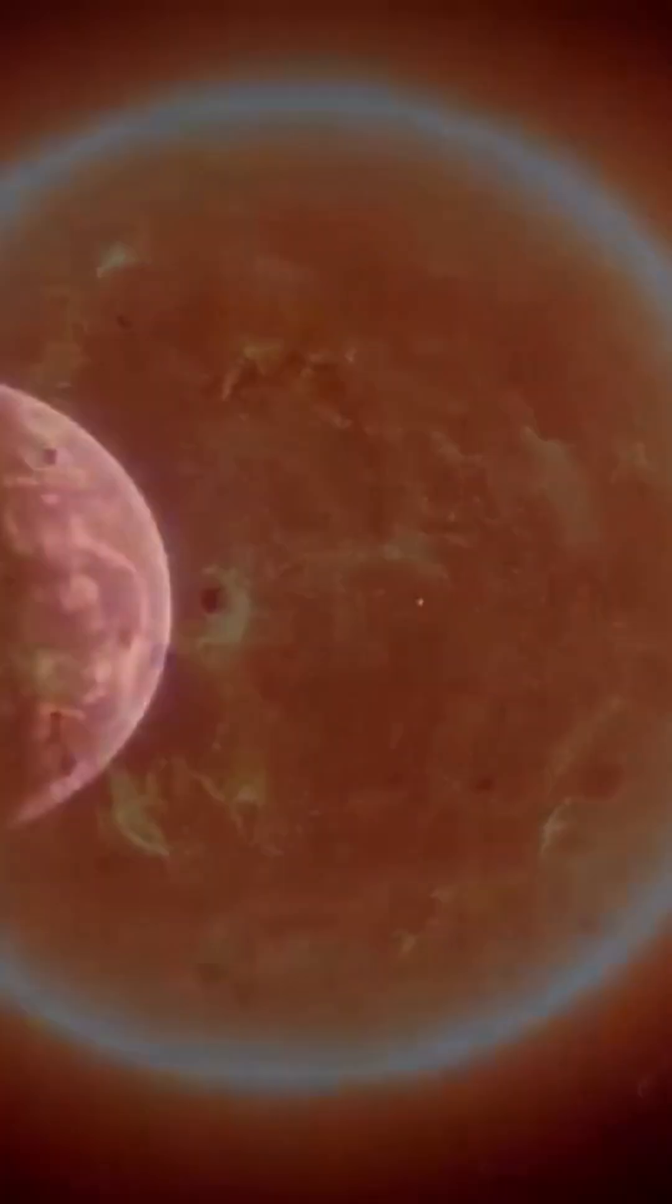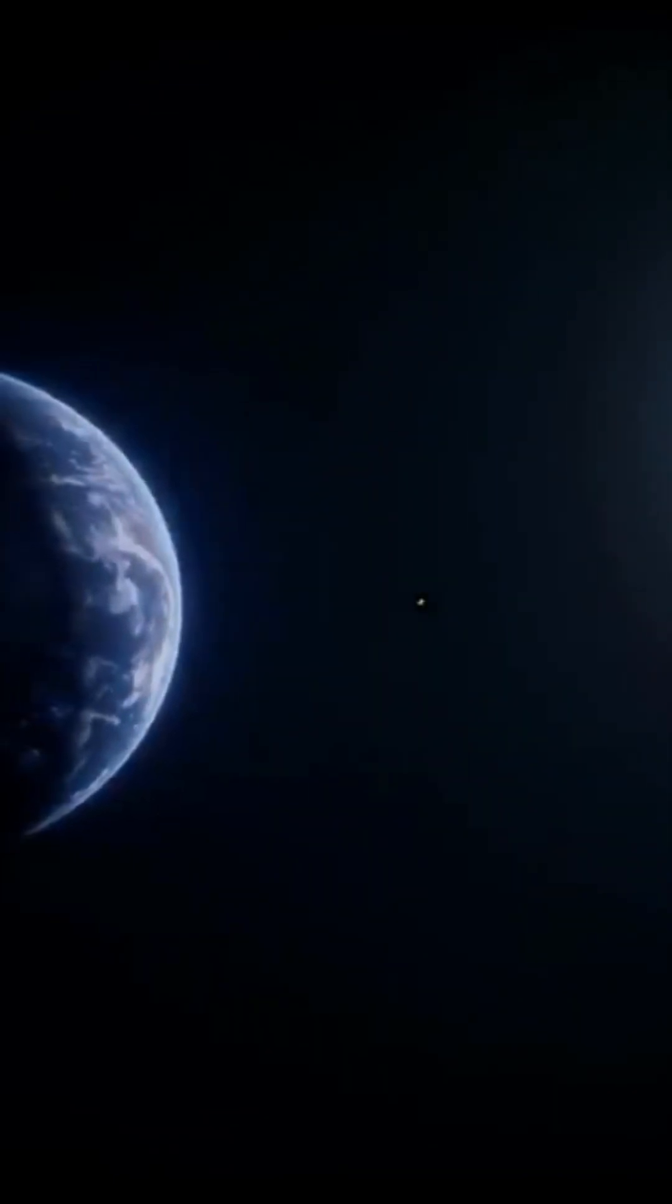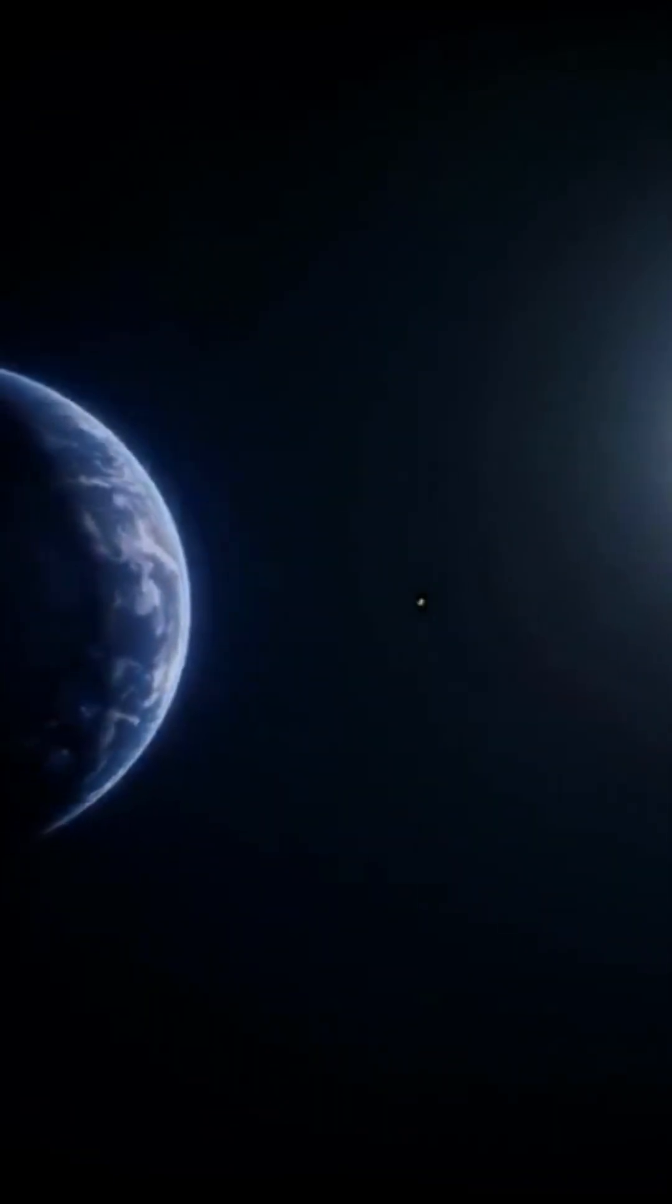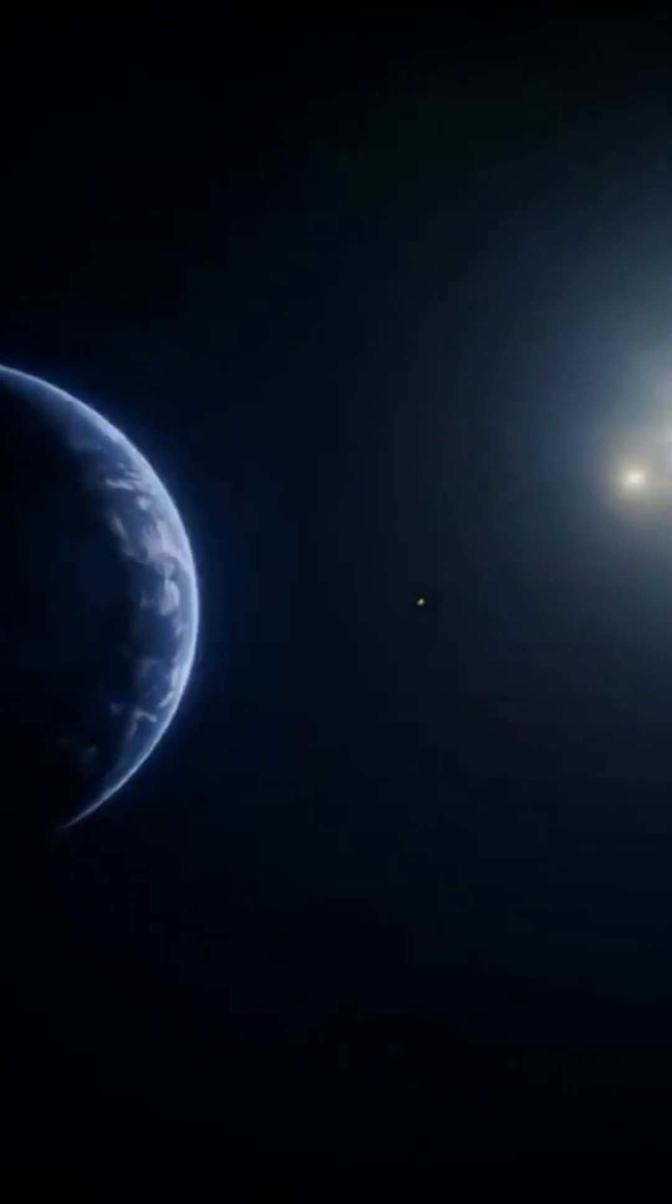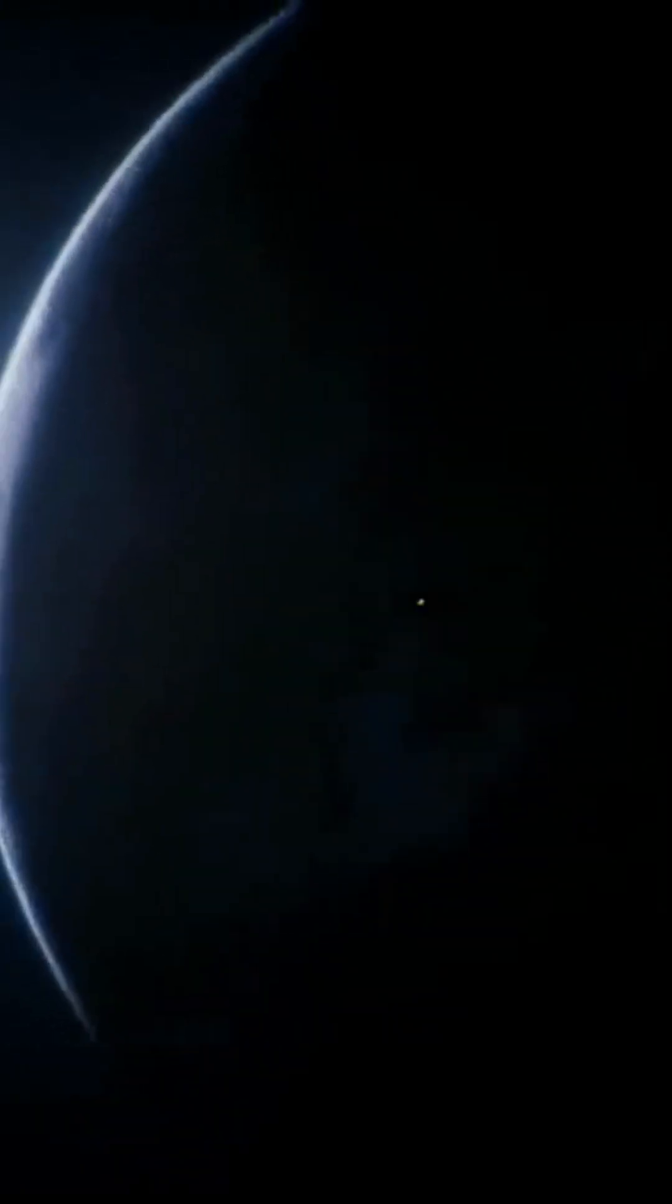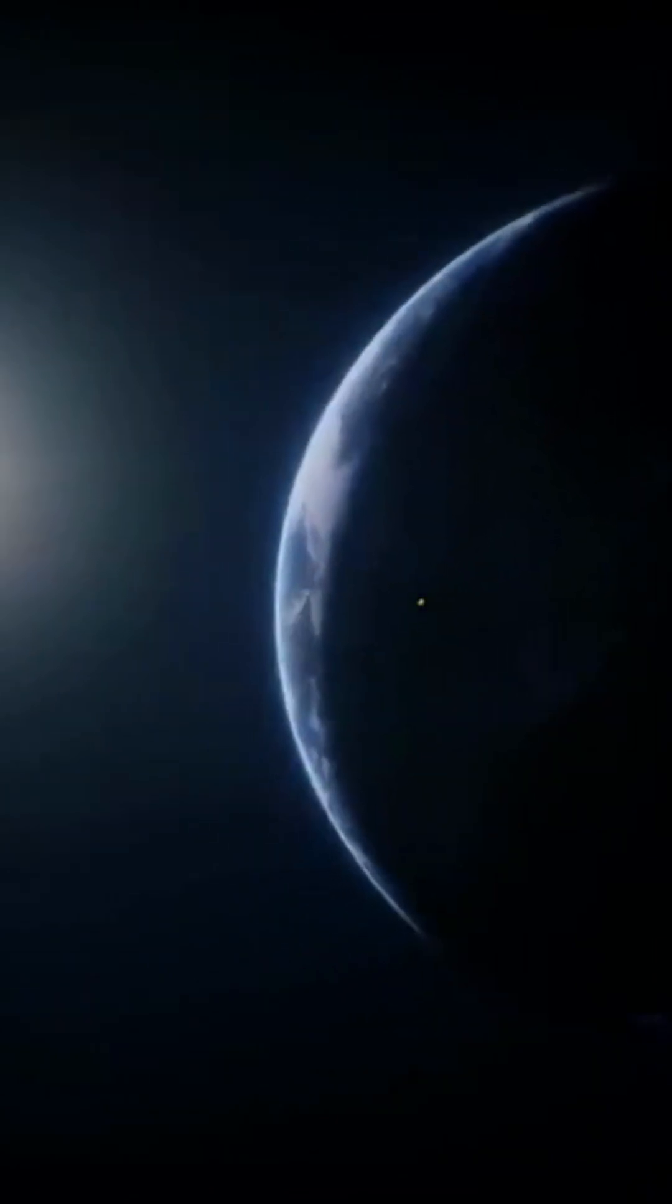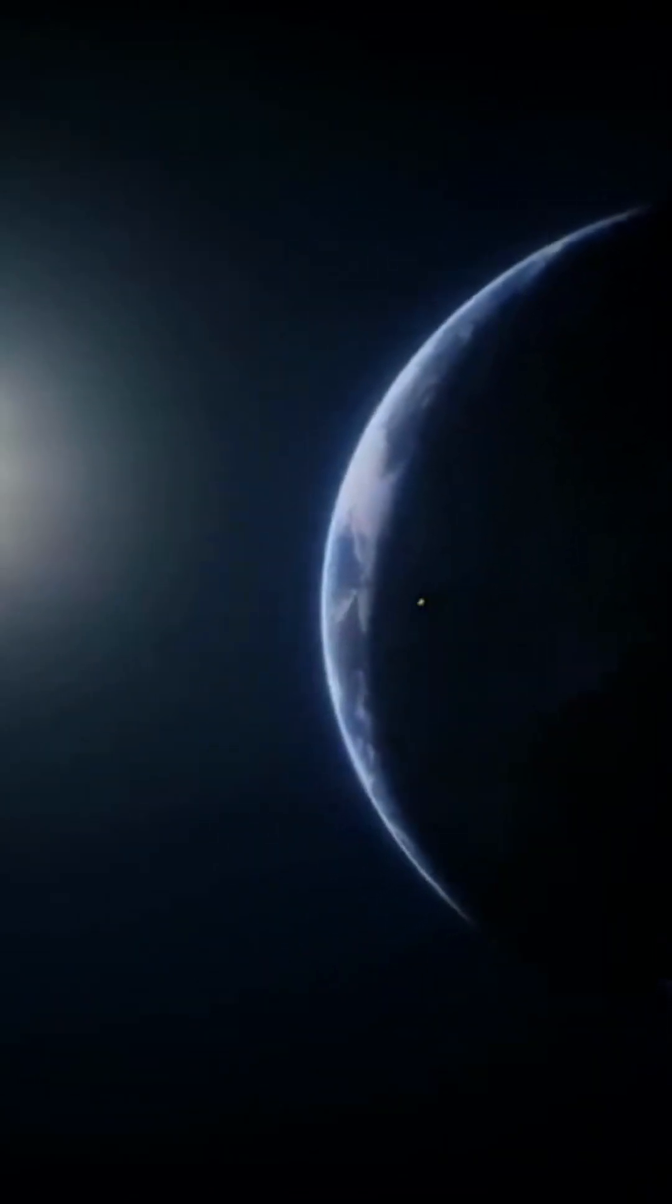This distance, which is only 5% of the distance between Alpha Centauri AB and our Sun, still suggests an orbital period of Proxima Centauri between 507,000 and 613,000 years around the main duo. The distance and its low orbital velocity explain why Proxima Centauri.